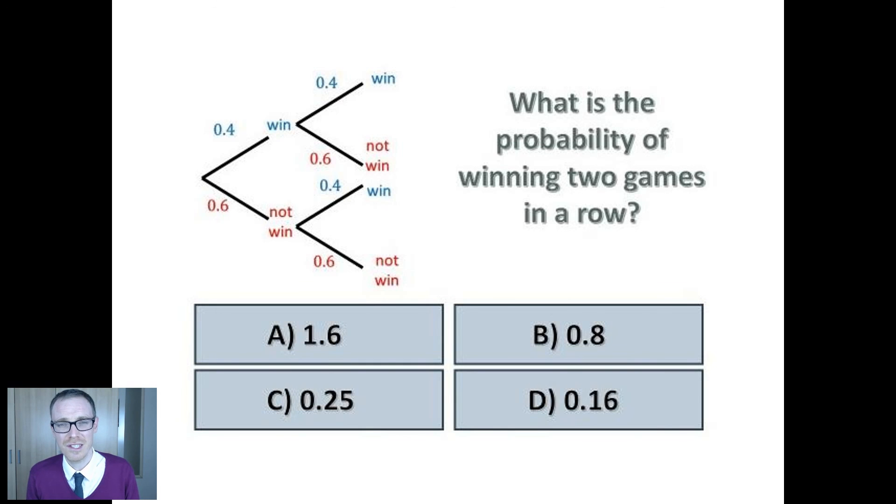And finally what about the child who answers C, 0.25? Where does that come from? Well for me that's a different misconception again. That's working on the assumption that there are four possible outcomes and each of them are equal. So I'm not even taking into account the values of the decimals on the branches of the tree diagrams.